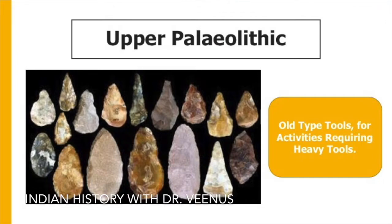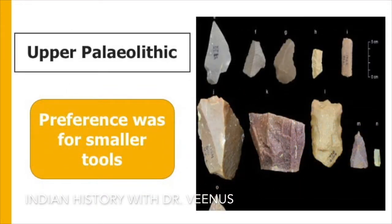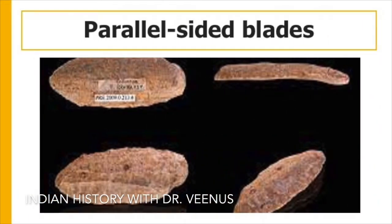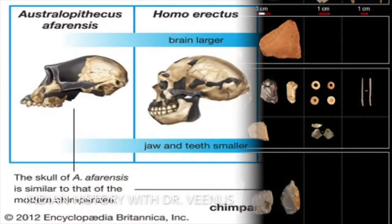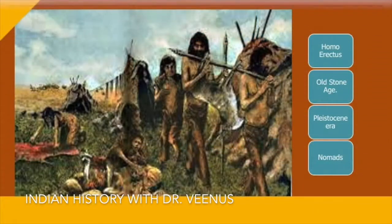In the Upper Paleolithic, while older tool types continued to be used for activities that required heavier tools, the preference was for small tools. An increase in the number of burins and the making of parallel-sided blades now characterized the toolkit. The successive reduction in the size and weight of tools is not only indicative of better motor skills, but also an increasing brain size that facilitated the planning of such varied techniques requiring precision. The tool types of the three phases are believed to represent three stages of human evolution.